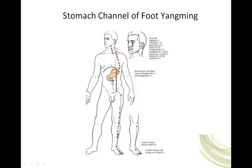There is another internal branch that leaves the pylorus of the stomach. It runs seemingly with the conception vessel, with the Ren. This makes sense because REN 12, which is in the middle of the upper abdomen between the umbilicus and the xiphoid process, is the front mu point of the stomach. So this branch leaves the pylorus, moves down, and then laterally to join the superficial branch of the primary channel and run down the anterolateral portion of the lower extremity.